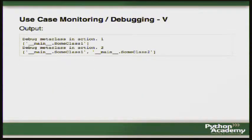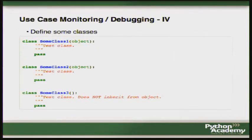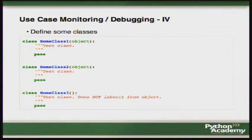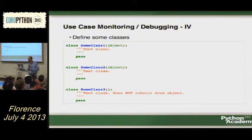I define three classes — two inherit from object and one does not. Since I changed the built-in object, I see different behavior at definition time without making any instances. You see the output: the first two classes are on the list, the third one is not because it doesn't inherit from object. So if you inherit from object, I change the behavior globally.